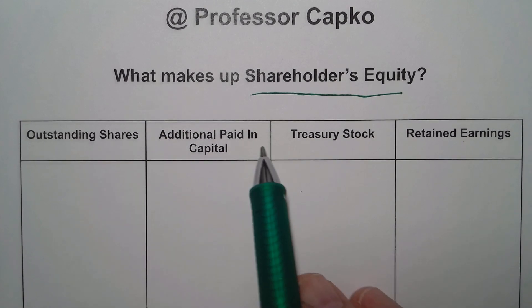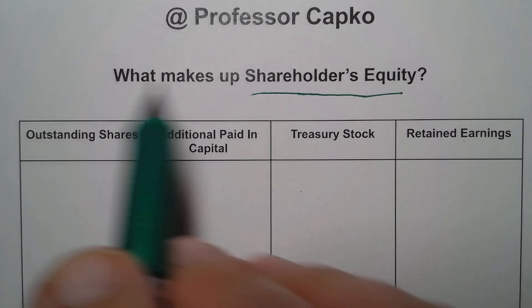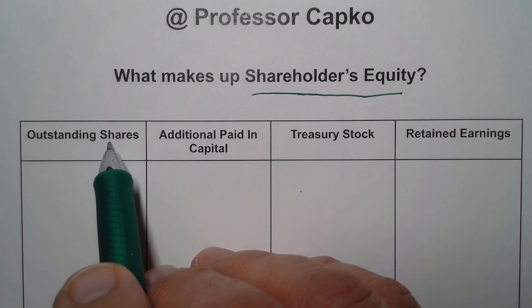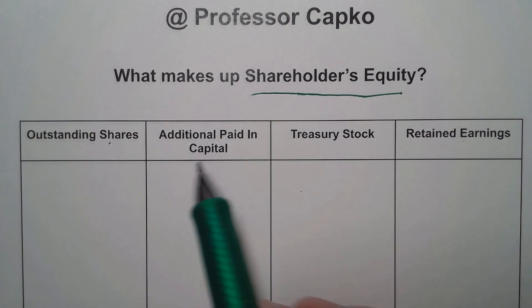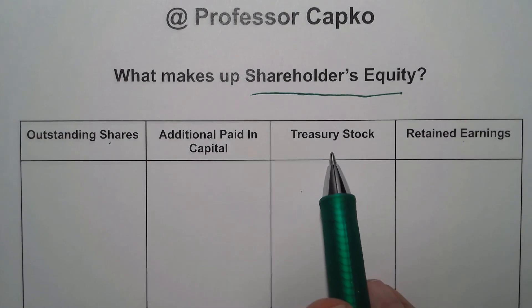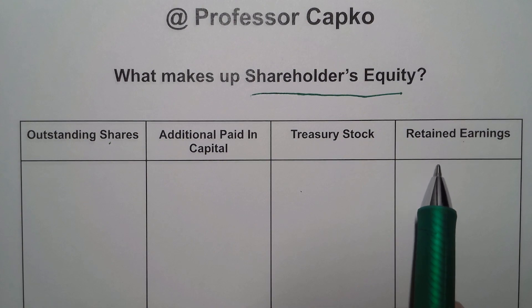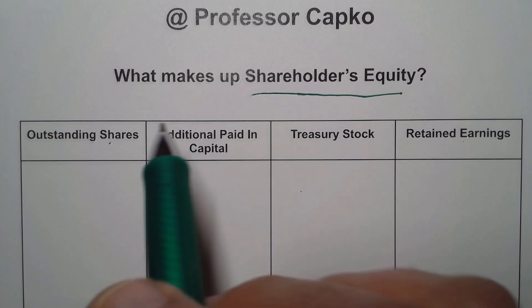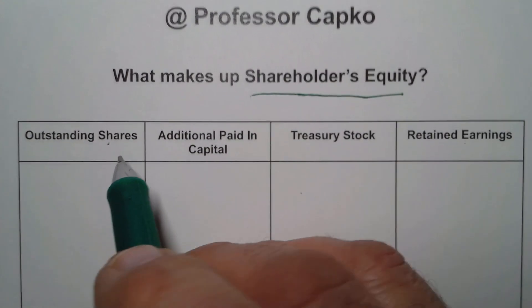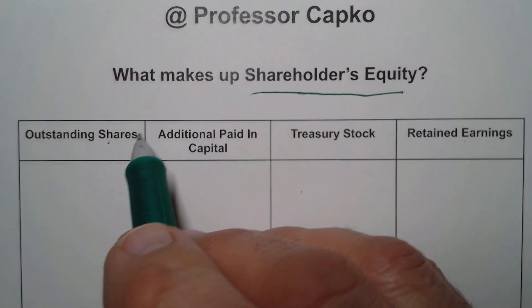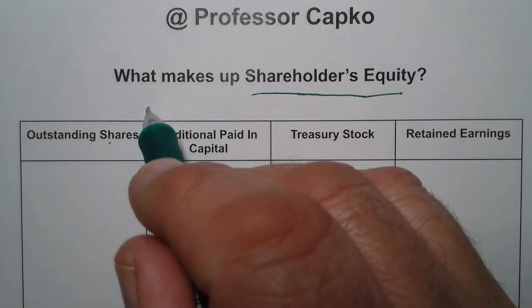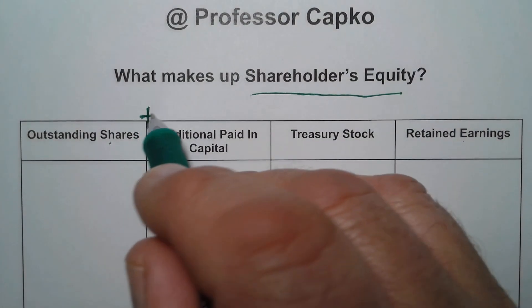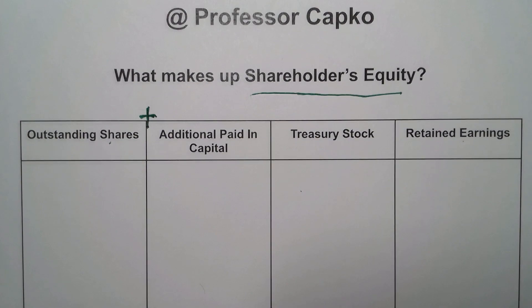We've got four main components: outstanding shares, additional paid-in capital, treasury stock, and retained earnings. Each of these are additive — in other words, all four of them add together to make up the shareholders equity.